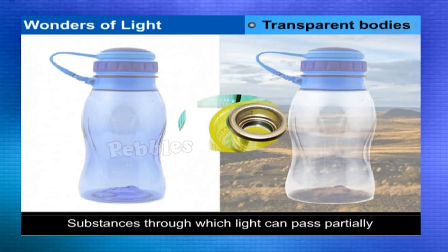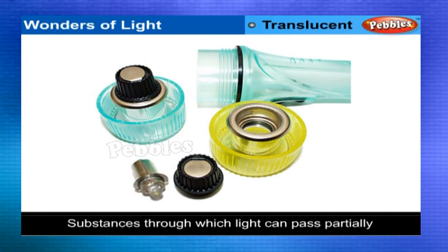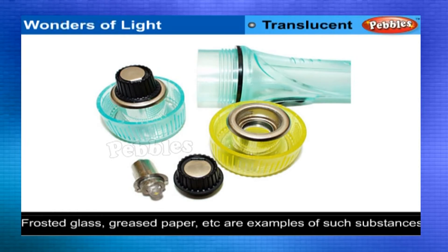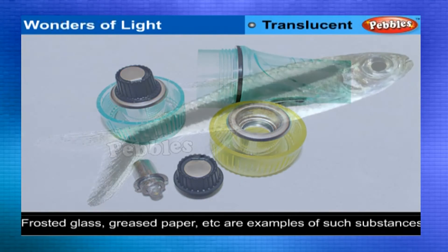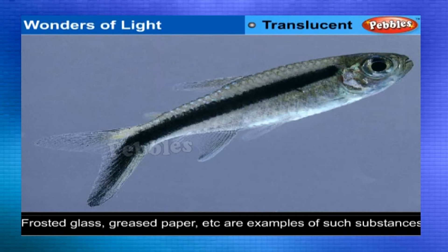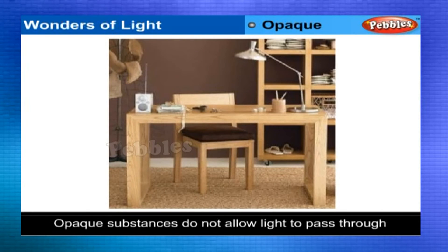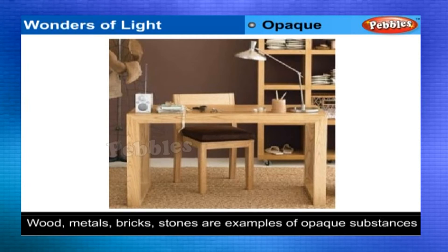Substances through which light can pass partially but through which we cannot see clearly are called translucent substances. Frosted glass, greased paper, butter paper, and wax paper are examples of such substances. Substances which do not allow light to pass through them at all are called opaque substances. Wood, metals, bricks, and stones are examples of opaque substances.